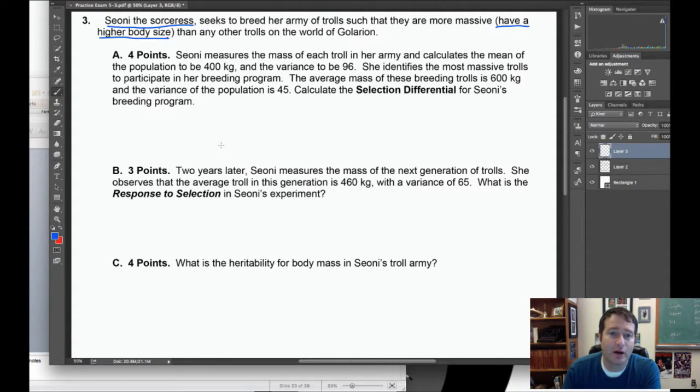These questions are almost always pertaining to the means of a particular trait. Sione measures the mass of each troll and then calculates the mean and variance of the population. The mean is 400 kilograms and the variance is 96. Then she decides to only let the biggest trolls breed. The average mass of the breeder trolls is 600 kilograms with a variance of 45. In these kinds of questions the variances are mostly a red herring.